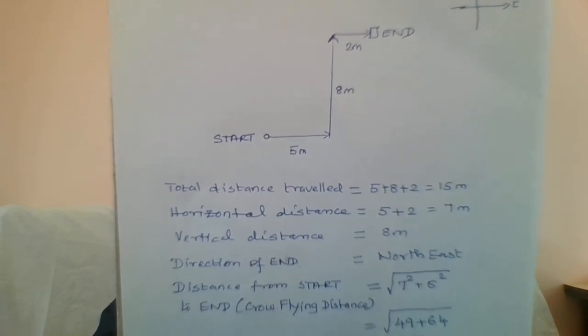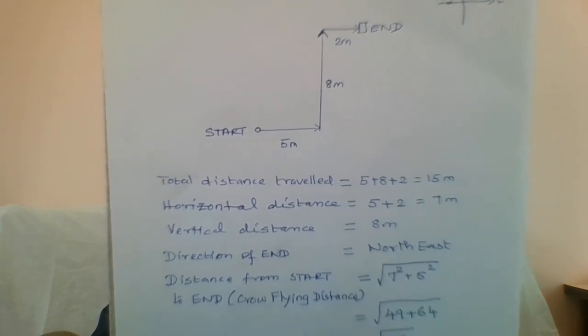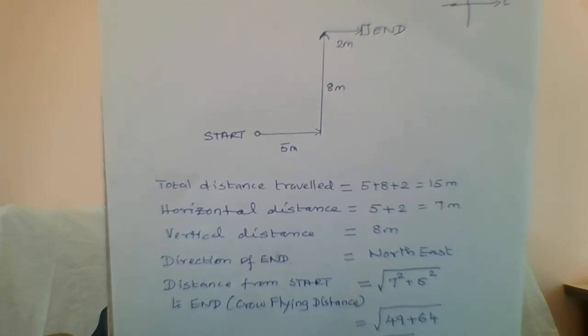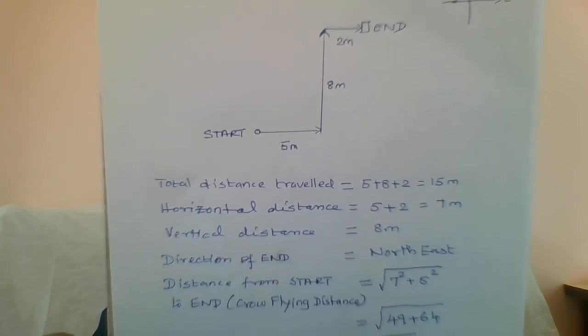So from the starting point to the end point, first he walks five meters towards East, takes a left turn and then walks eight meters, and then takes a right turn and walks two meters.